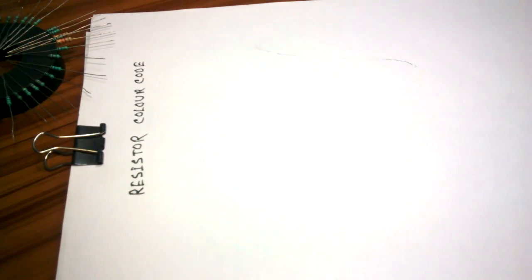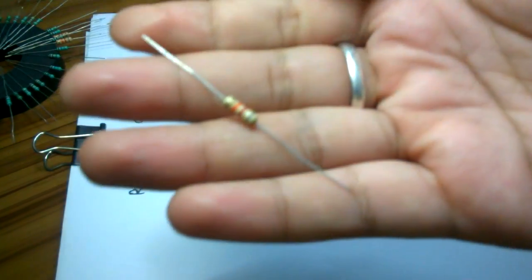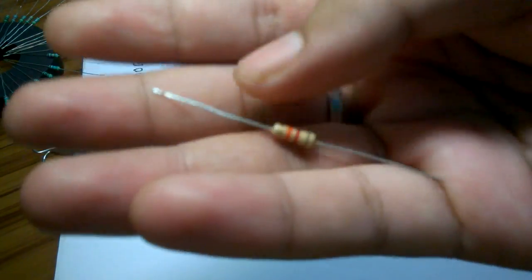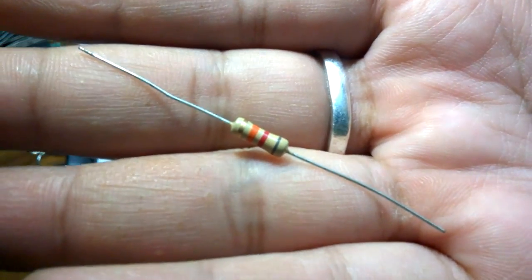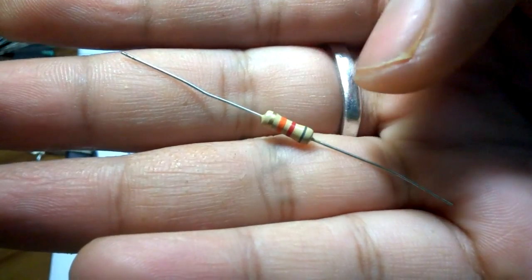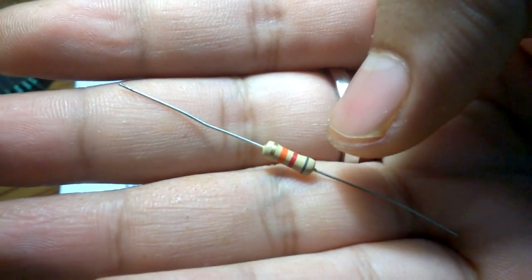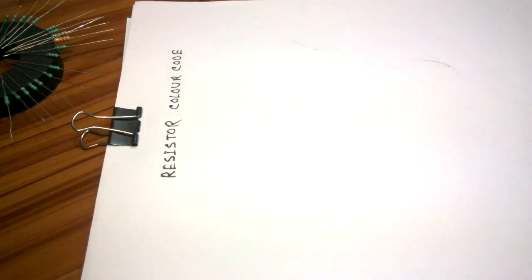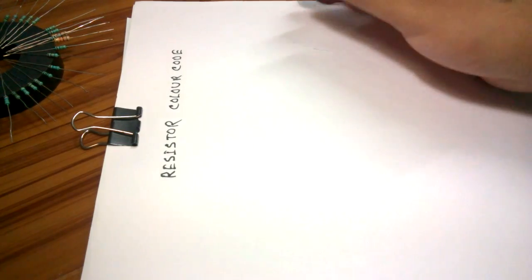What's up guys, our today's topic is how to calculate the value of any resistor. So first of all, have a close view of a resistor. Yes, so what we see there are four bands. That means it is a four band resistor.